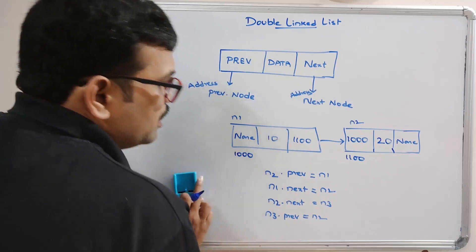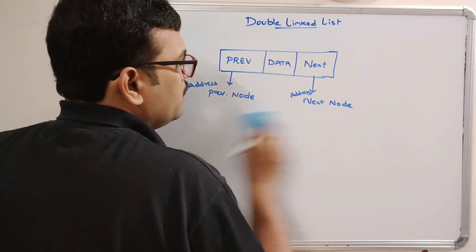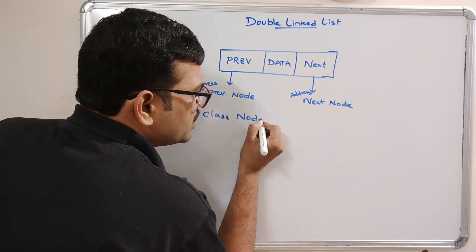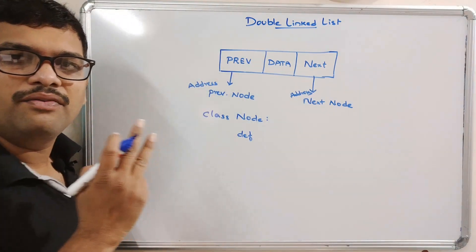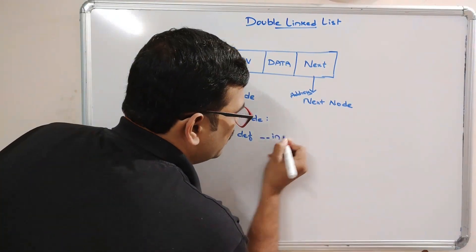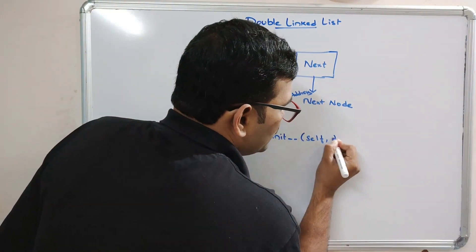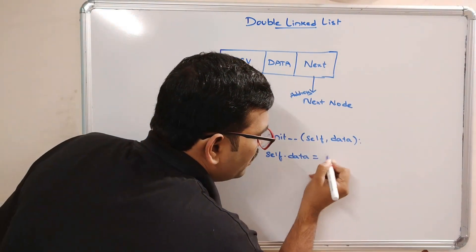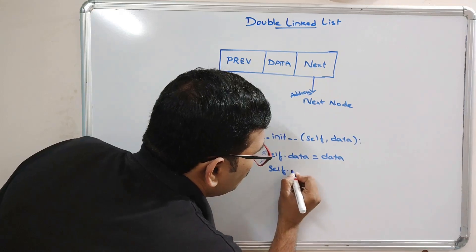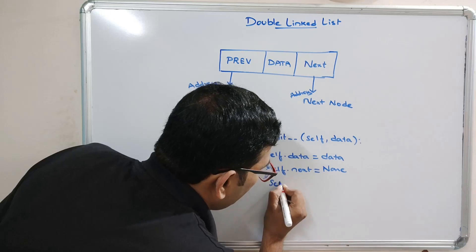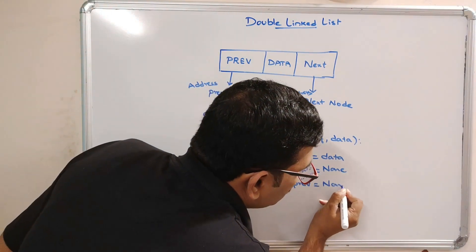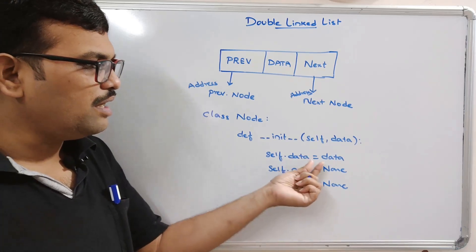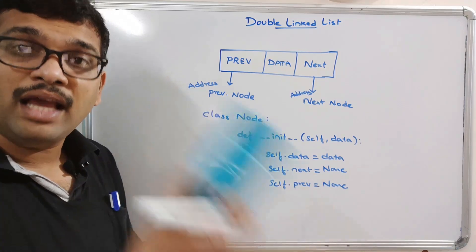Let me give a small overview before moving to the program. First, we need to create a node using a class called Node, similar to our single linked list. Inside the constructor, I'm defining three variables: self.data = data, self.next = None, and self.previous = None. This is the creation of the node — when you create an object for this class, the data is stored and the links are initialized to None.